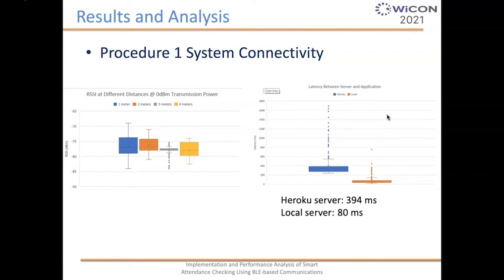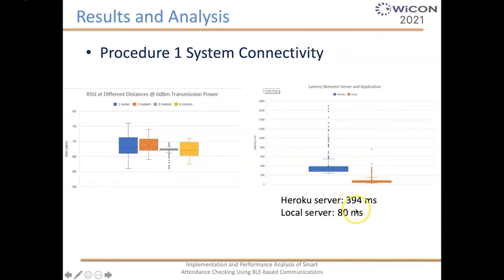For system connectivity results in procedure one, we looked at the received signal strength indication (RSSI) depending on the distance of smartphones to the BLE device. In our simulated classroom, we saw virtually almost the same RSSI, which is a good thing. Looking at latency, for the Heroku server the latency is 394 milliseconds, and for a local server it's 80 milliseconds.